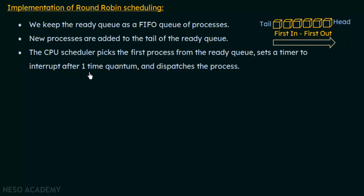The time quantum is a particular period of time — it could be 3, 4, or 50 milliseconds depending on the case. Once the CPU scheduler assigns the CPU to the first process at the head of the queue, a timer is set and runs for that one time quantum. If the quantum is 5 milliseconds, the timer runs for 5 milliseconds and at the 5th millisecond the timer goes off, causing the CPU scheduler to take control of the CPU from the current process and give it to the next process waiting in the ready queue.